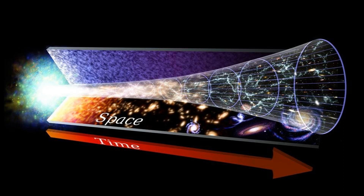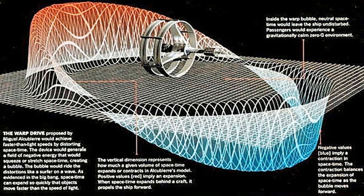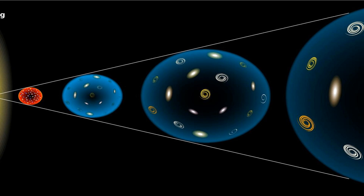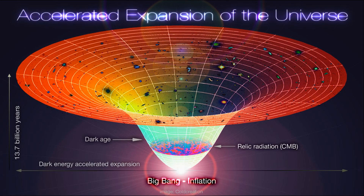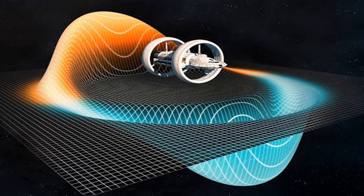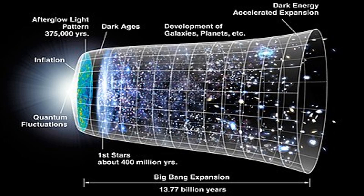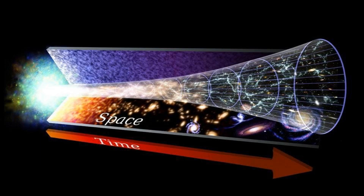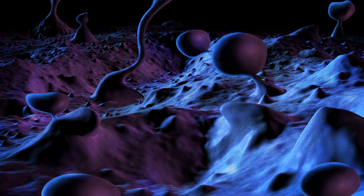In the context of the Alcubierre Drive, expanding and contracting spacetime is the key mechanism that enables faster-than-light travel. The concept proposes the creation of a warp bubble around a spacecraft. Inside this bubble, spacetime is stretched behind the vessel while being contracted in front of it. By doing so, the spacecraft essentially rides a wave of expanding and contracting spacetime, allowing it to travel at speeds faster than light. This idea is based on the mathematical solutions of Einstein's field equations of general relativity.